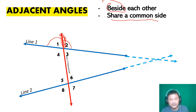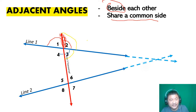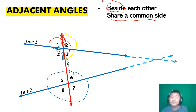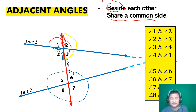Angle two and angle three are adjacent. Another pair: angle three and angle four — they're beside each other and sharing this side. How about angle four and angle one? They're sharing that side. On the other side there are also adjacent angles. Here are the final adjacent angle pairs.